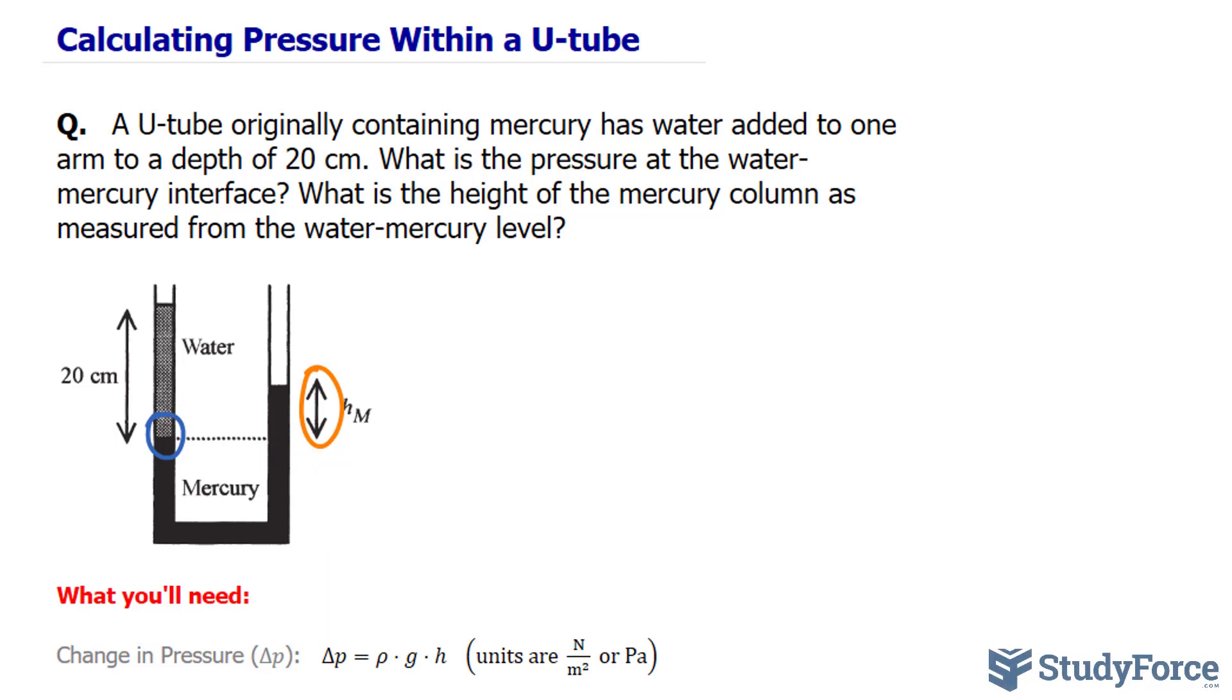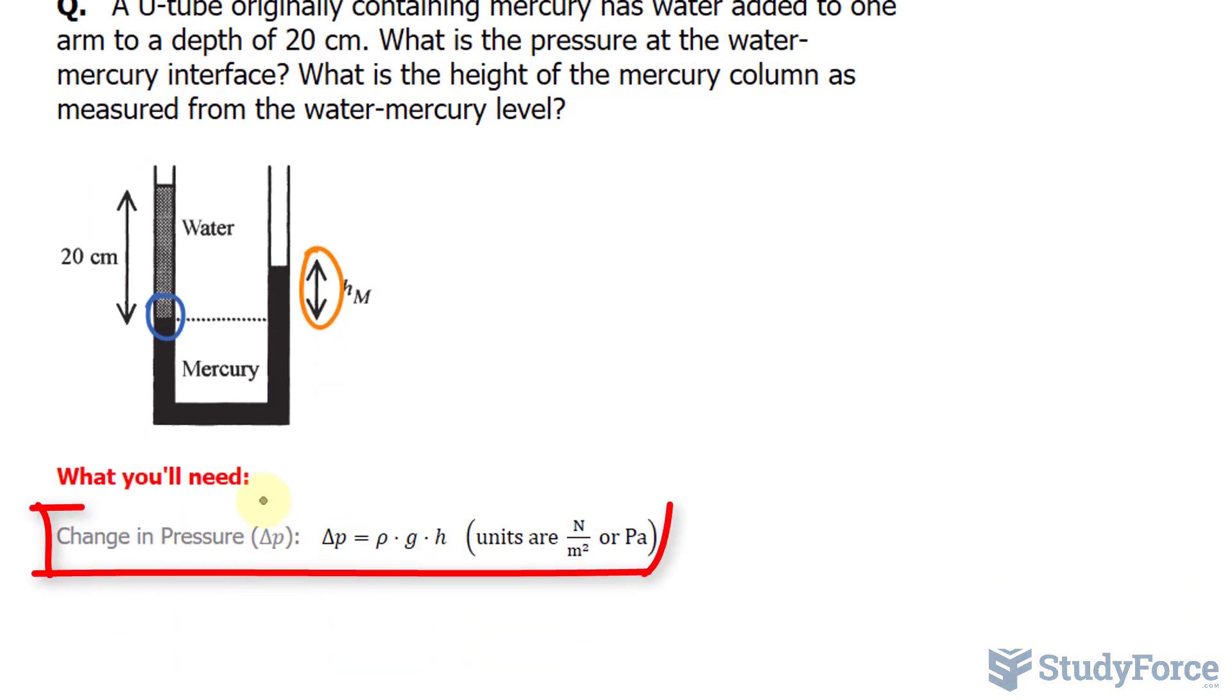With that being said, let's look at an important formula that we'll need to answer this question, and that's the formula for the change in pressure shown underneath, where pressure is equal to rho, that's the density of the material, in this case it's water, times the acceleration due to gravity represented as g times the height.